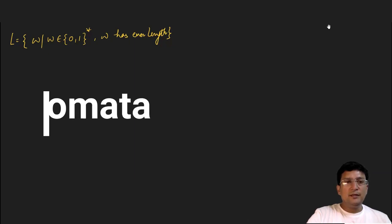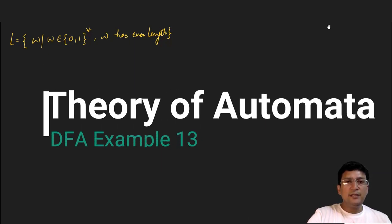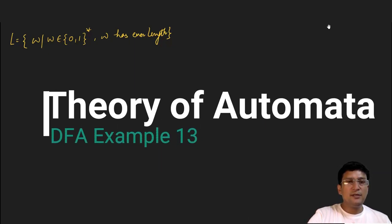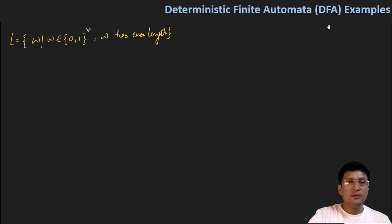Hello everyone, let's take another language and design the DFA for this. This language says that W, where W is an element of {0,1}*, meaning it contains only 0 and 1 symbols, and W is of even length.